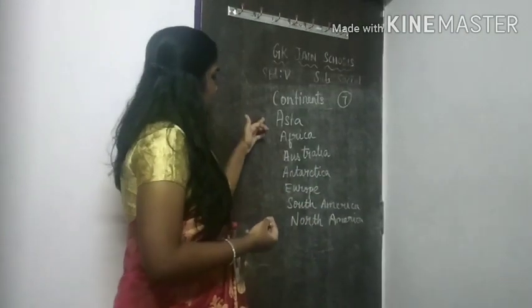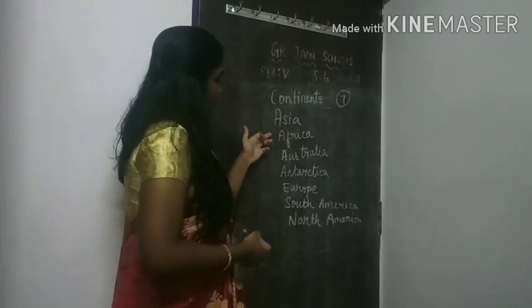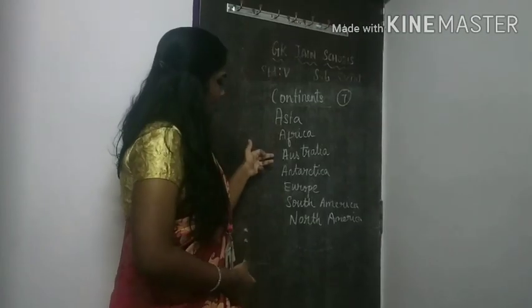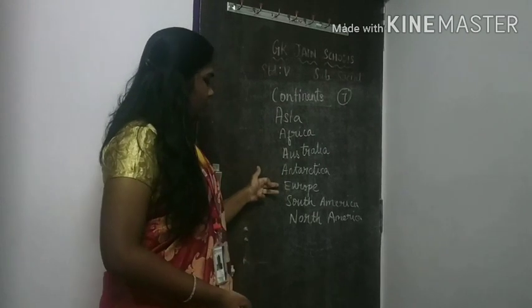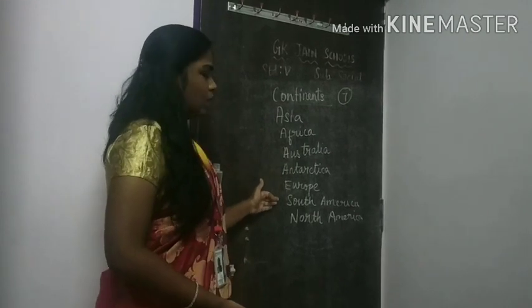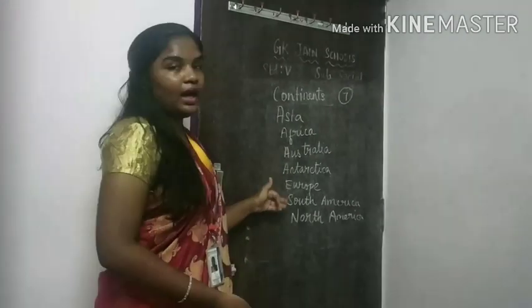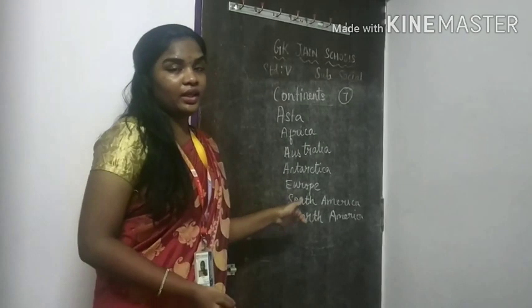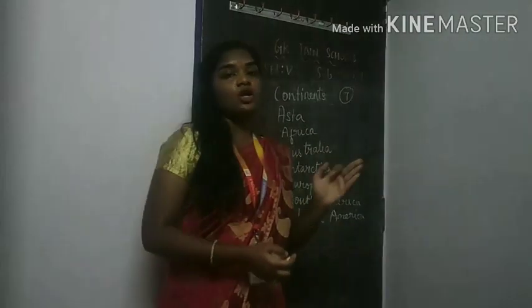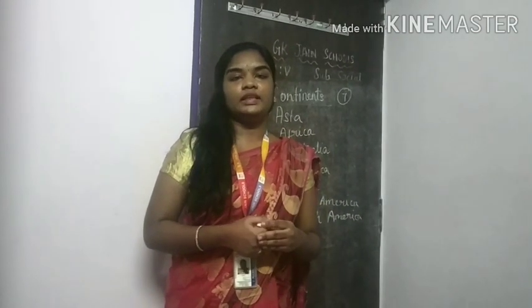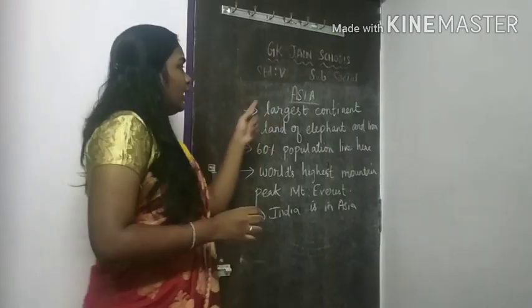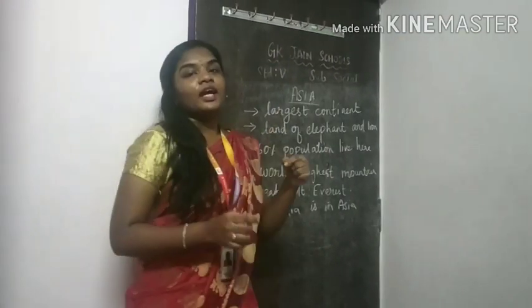The 7 continents are: Asia, Africa, Australia, Antarctica, Europe, South America, and North America. These are all the 7 continents that are present on the earth.